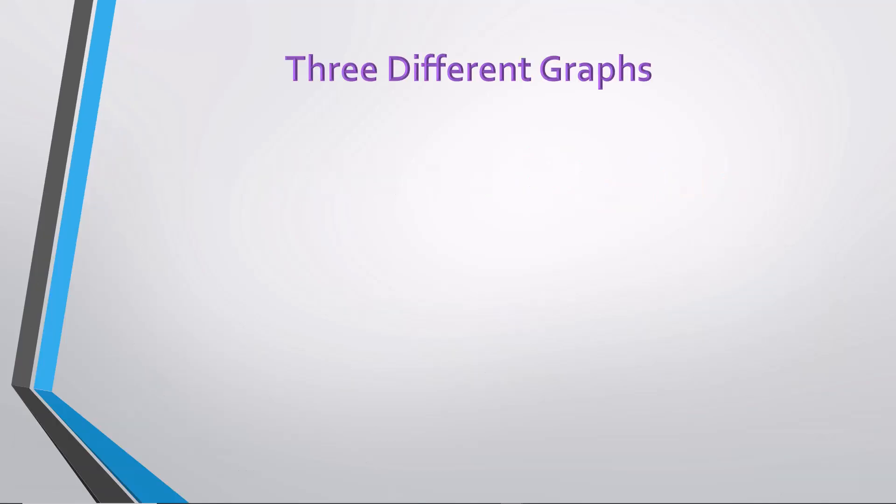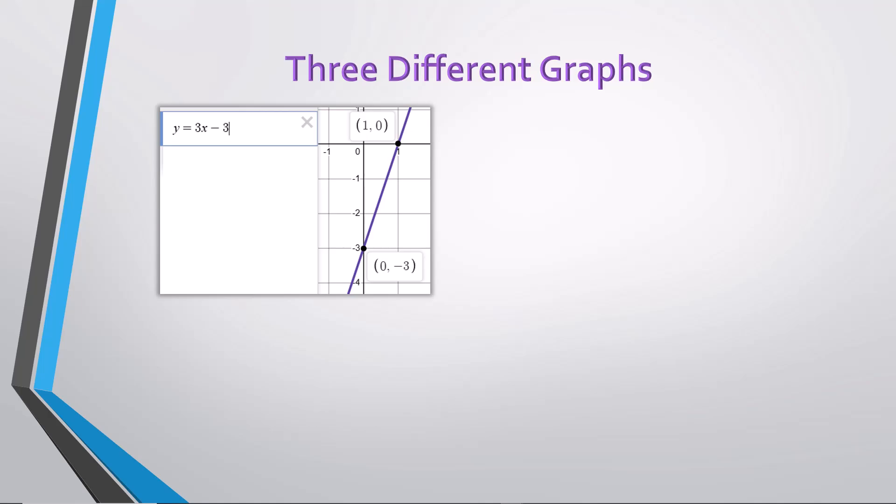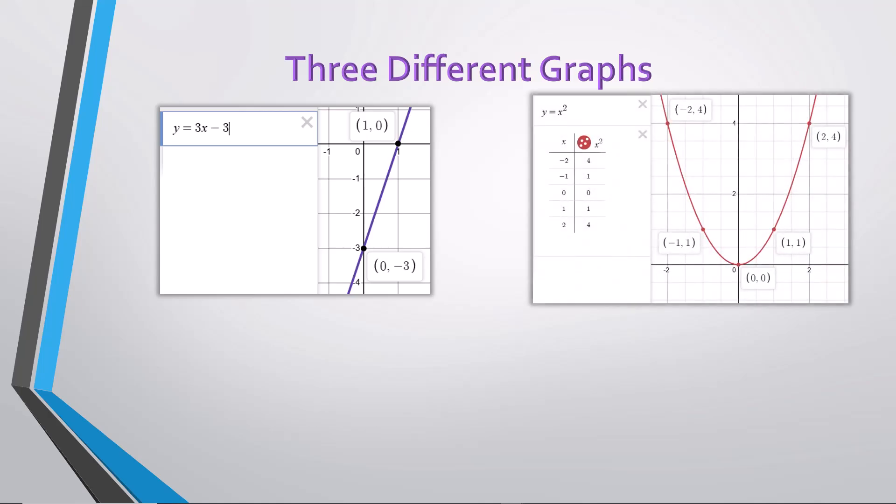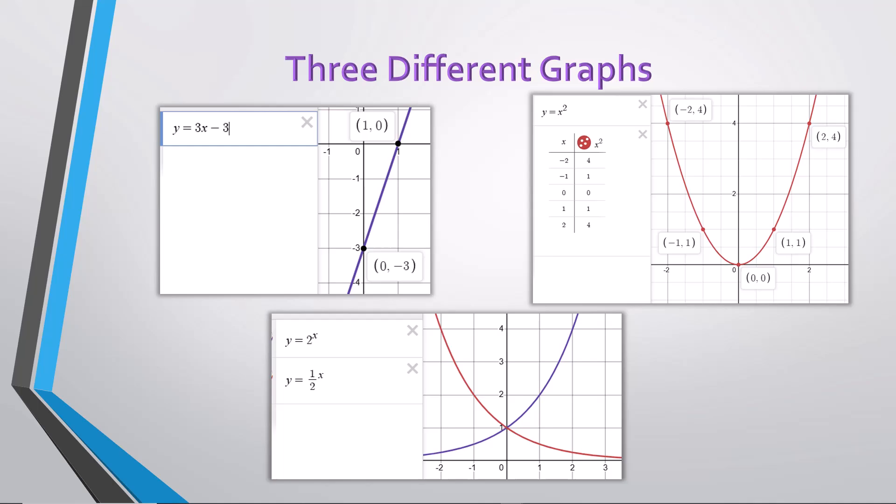In addition to straight line graphs represented by equations in slope-intercept form like y equals 3x minus 3, crossing the y-axis at negative 3 with a slope of up 3 over 1, there are curved line graphs like the parabola with the equation y equals x squared, and the exponential curve with the equation y equals 2 to the power of x.